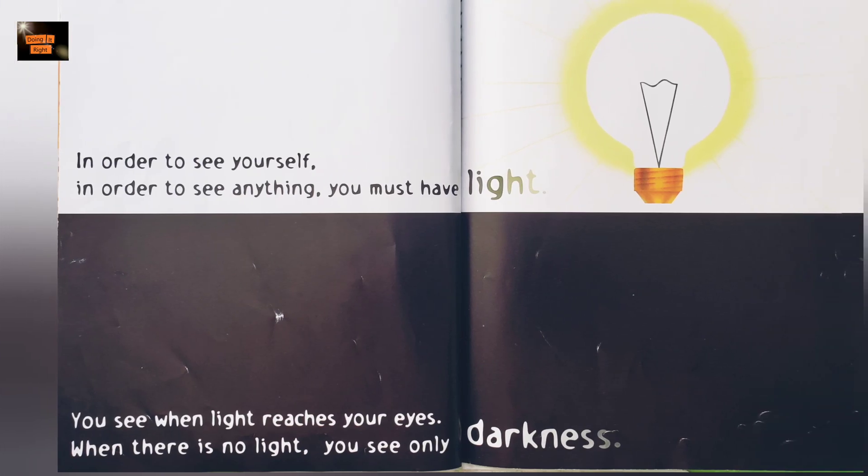Can you see yourself in the dark? In order to see yourself — to see anything — you must have light. You see when light reaches your eyes. When there is no light, you see only darkness.